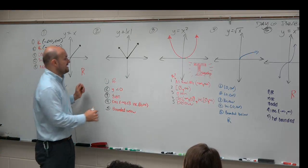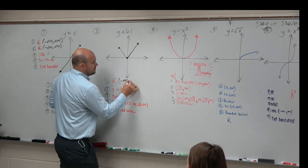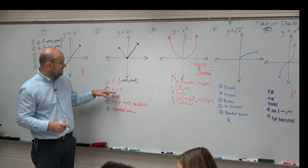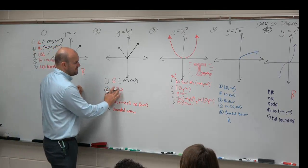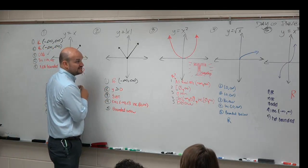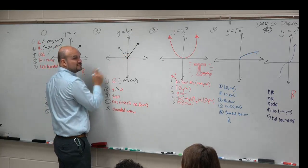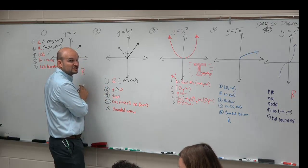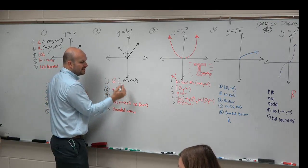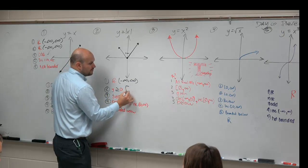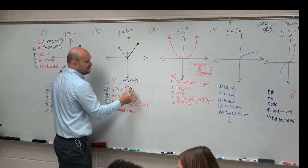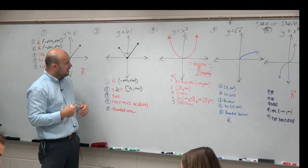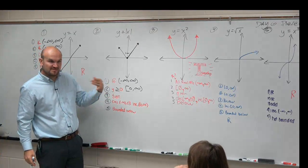The next one: again, the domain is going to be all real numbers, so negative infinity to infinity. For the range, they say y is less than zero — I think they meant to say y is greater than zero, because obviously you have y values larger than 1. However, zero is included, so you'd have to write it as y is greater than or equal to zero. Practicing interval notation: since it's included, we're going to use a bracket, and then it goes up to infinity.